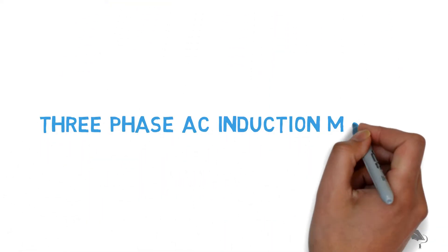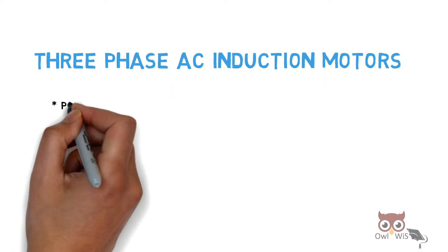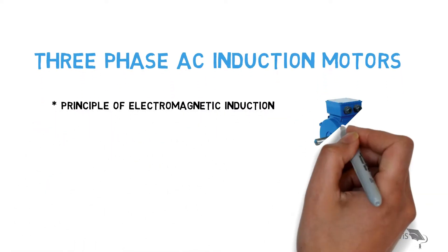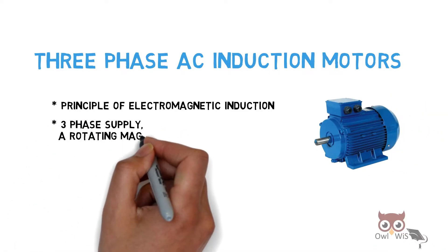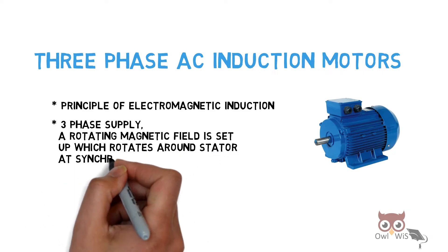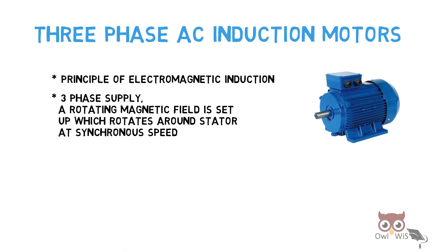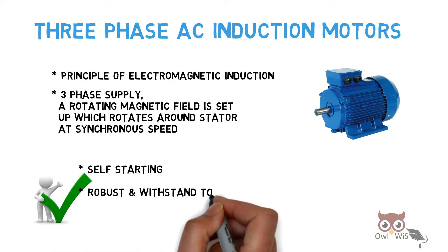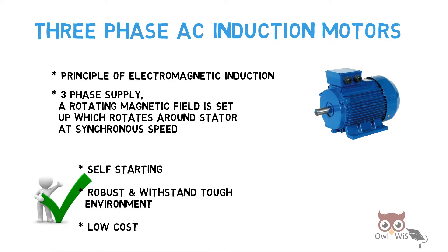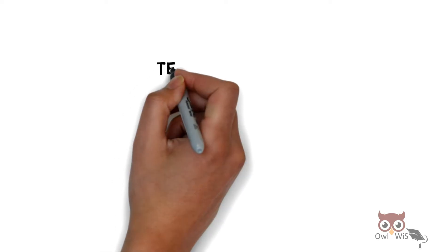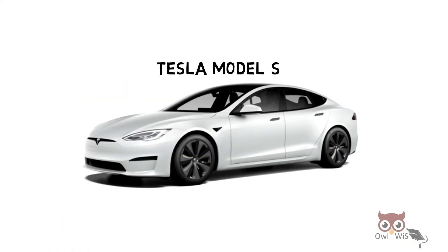Next, three-phase AC induction motors. These work on the principle of electromagnetic induction, where a three-phase supply is provided and a rotating magnetic field is set up which rotates around the stator at synchronous speed. The advantages are that they are self-starting, robust, can withstand tough environments, and are low cost. The disadvantage is that the power factor is low during light load conditions. The Tesla Model S uses this type.